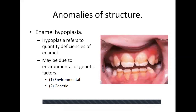Regarding anomalies of structure: enamel hypoplasia refers to quantity defects of the enamel and may be due to environmental or genetic factors. Environmental factors include systemic diseases, fevers, fluorosis, nutritional deficiencies — particularly vitamins A, C, and D, calcium and phosphorus — neurological defects such as Sturge-Weber syndrome, cleft lip and palate, radiotherapy, chemotherapy, lead poisoning, and rubella. Genetic factors include amelogenesis imperfecta, which will be discussed in further topics.